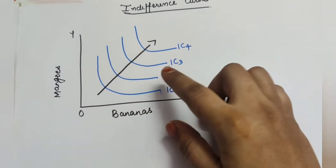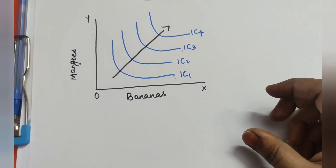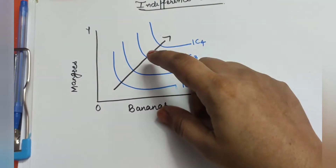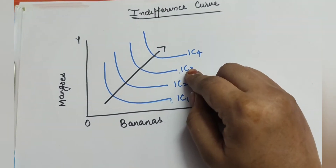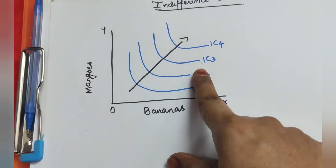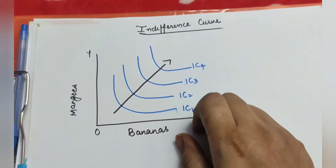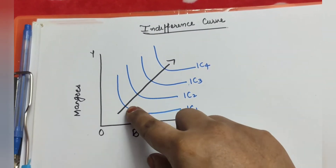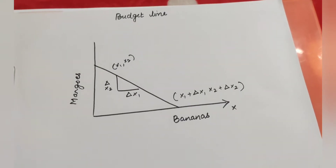The indifference curve represents a family of curves — bundles of combinations of goods which a consumer is purchasing. Higher the indifference curve, higher is the level of satisfaction. A rational consumer will always prefer maximum satisfaction. On the graph, OX represents bananas and OY represents mangoes. IC1, IC2, IC3, and IC4 are various indifference curves; higher curves depict higher levels of satisfaction for the consumer.